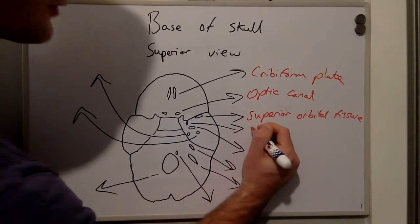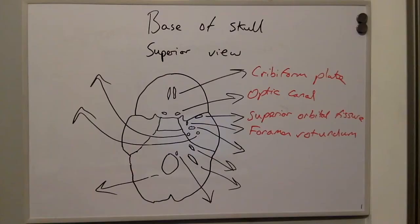Here we have the foramen rotundum. And then inferior to this we have the foramen ovale.